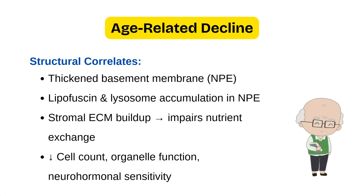ATP and cyclic AMP play an important role in regulating aqueous humor production, and sensitivity to cyclic AMP and other hormones and cytokines decreases with age.